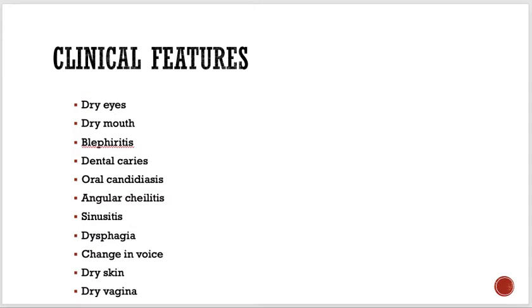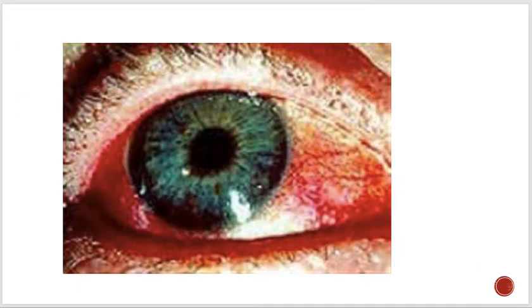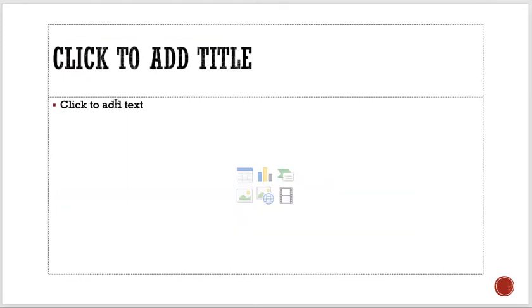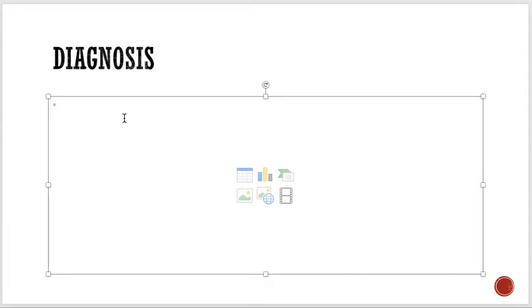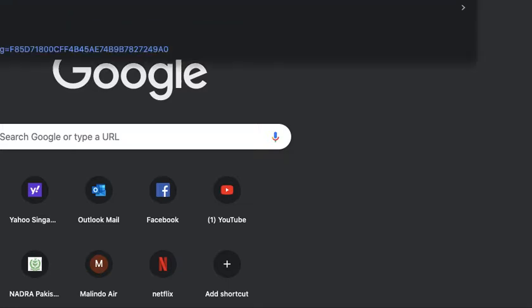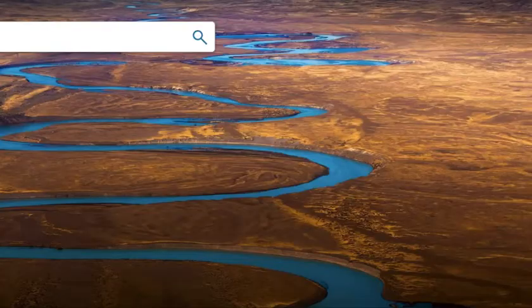Now I'll show you how the tongue looks and what conjunctivitis looks like. For diagnosis, the Schirmer test, or Schirmer tear test, is used to measure how much tears the lacrimal glands are producing.